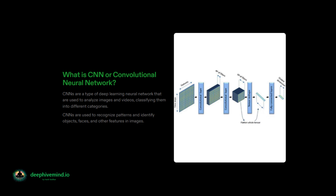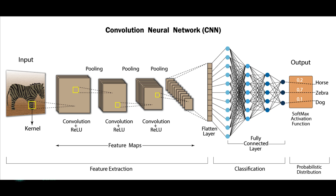CNNs consist of multiple layers of neurons, with each layer processing and analyzing the input data in a different way. The layers are organized in a hierarchical structure, with the first layers analyzing low-level features such as edges and textures, and the later layers analyzing higher-level features such as shapes and objects. CNNs are highly effective at recognizing patterns and features in visual data and have been used in applications including self-driving cars, medical imaging, and image search engines.